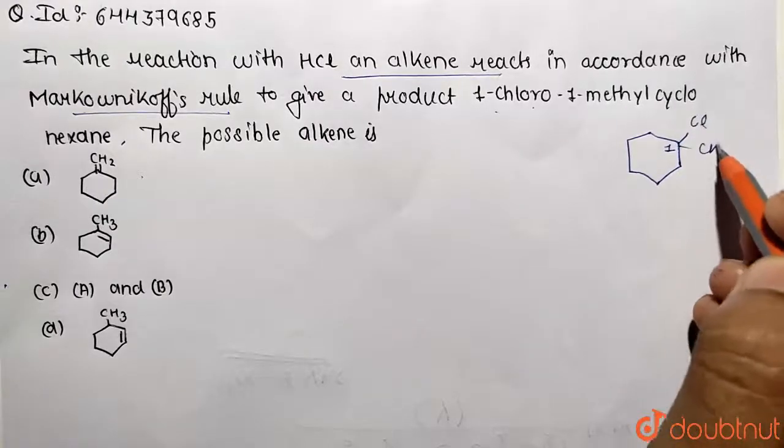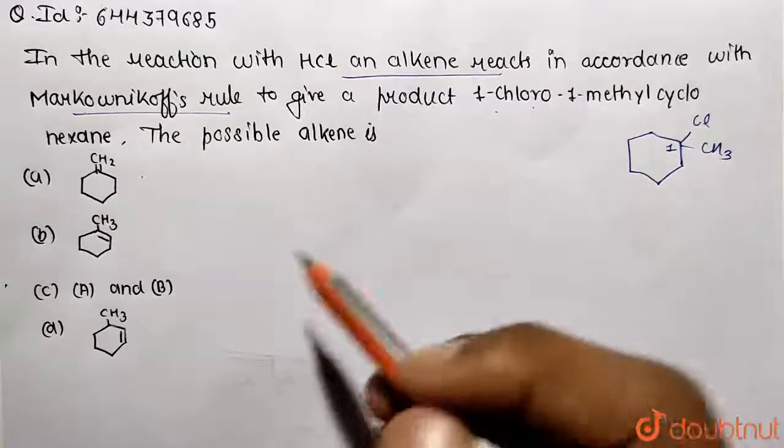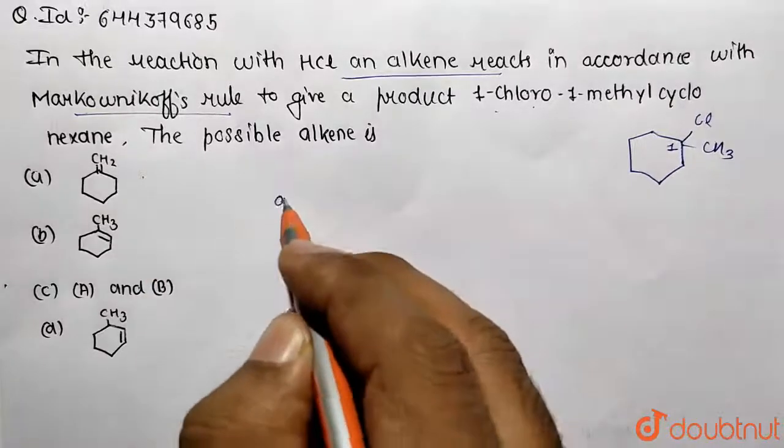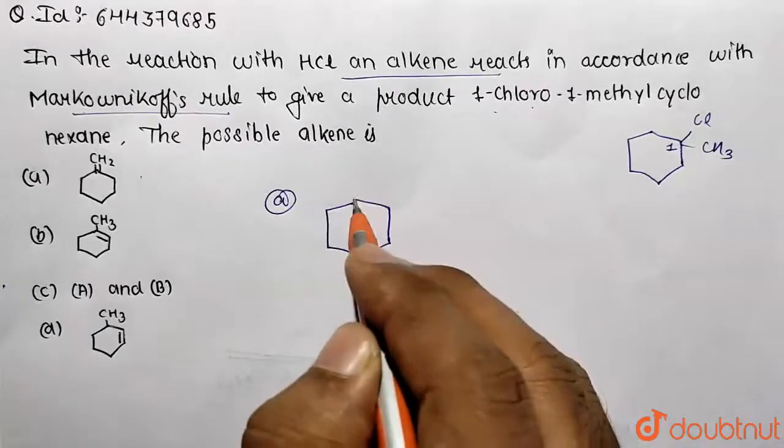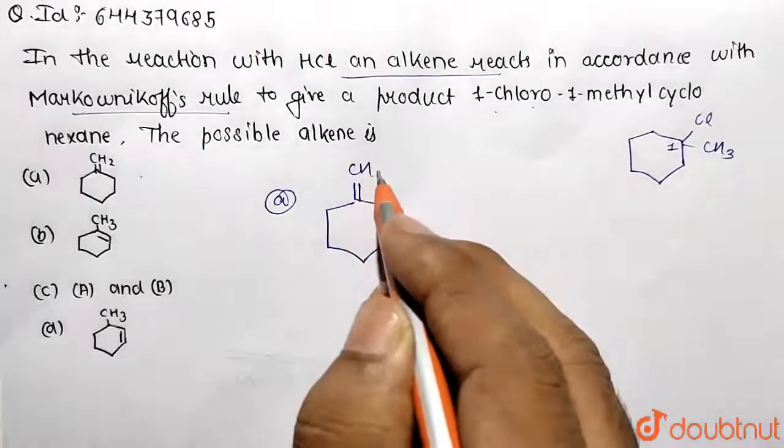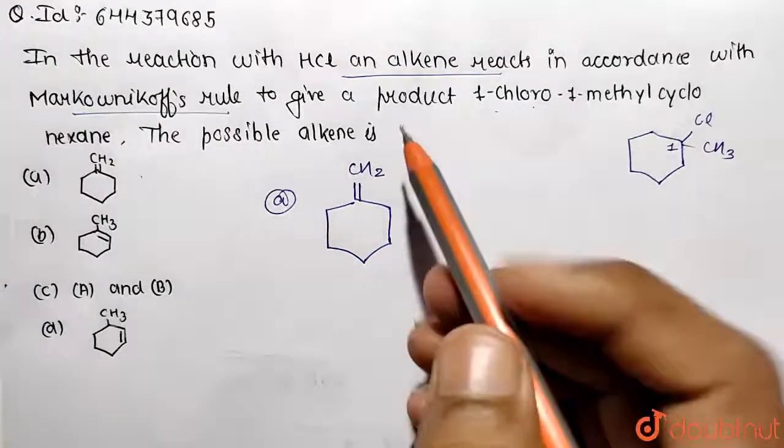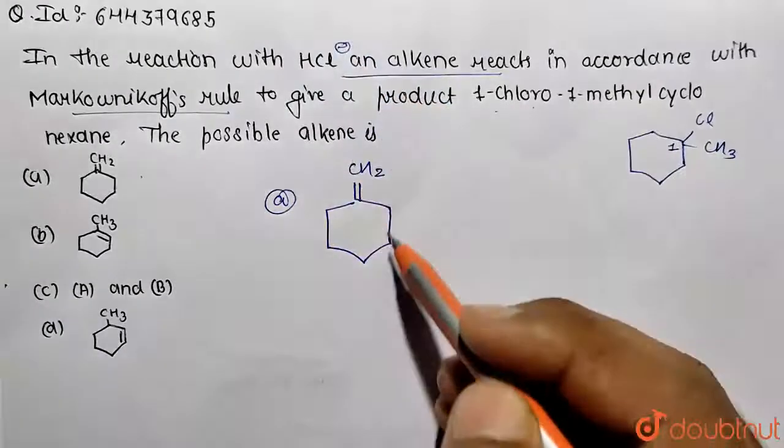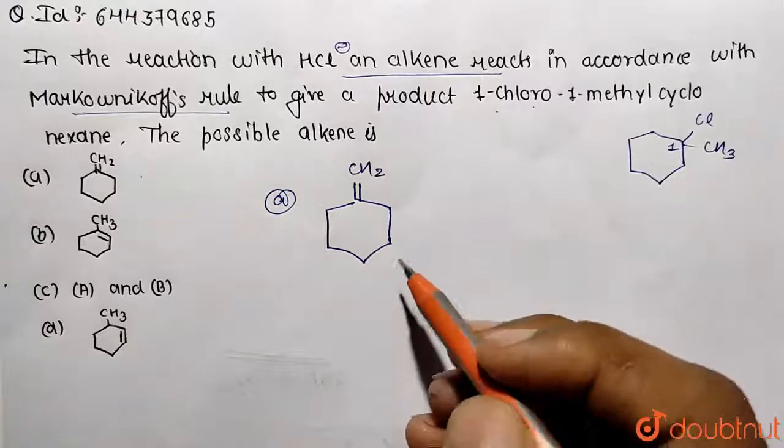We need to identify this product from the following set of options given. Let's perform reactions on every option. Here we have Option A which contains a double bond over here. By Markovnikov's rule, we know that HCl is present, so the negative charge will go to the carbon containing less number of hydrogens. You can go by that method or by the mechanism.